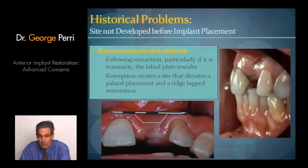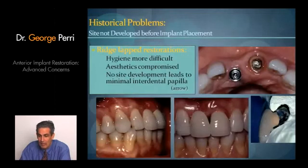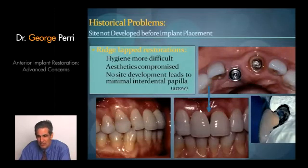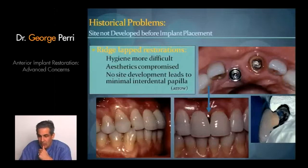We might be able to place an implant, but it would be placed much more palatally than ideal. We also have a non-ideal shape of the soft tissue, which forces us to do what we call a ridge lap to achieve the restoration — which ends up looking like the restoration is just floating above the tissue. And we often end up with this triangle, this dark hole.